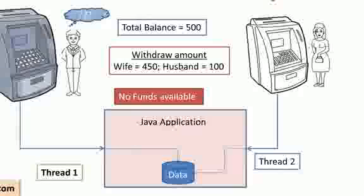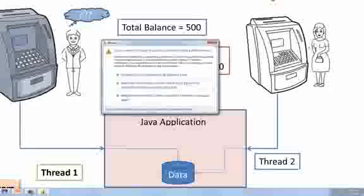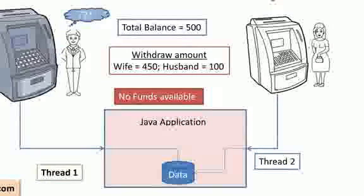If the husband's thread is successful in withdrawing the amount, then obviously even the wife will have some confusion about why her transaction is a failure. And to take another example of the need for thread safety...